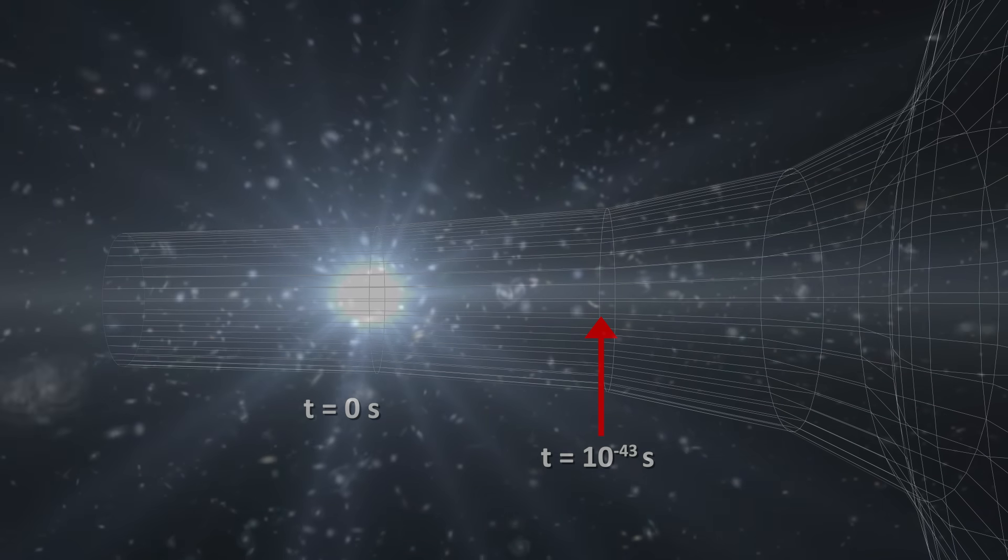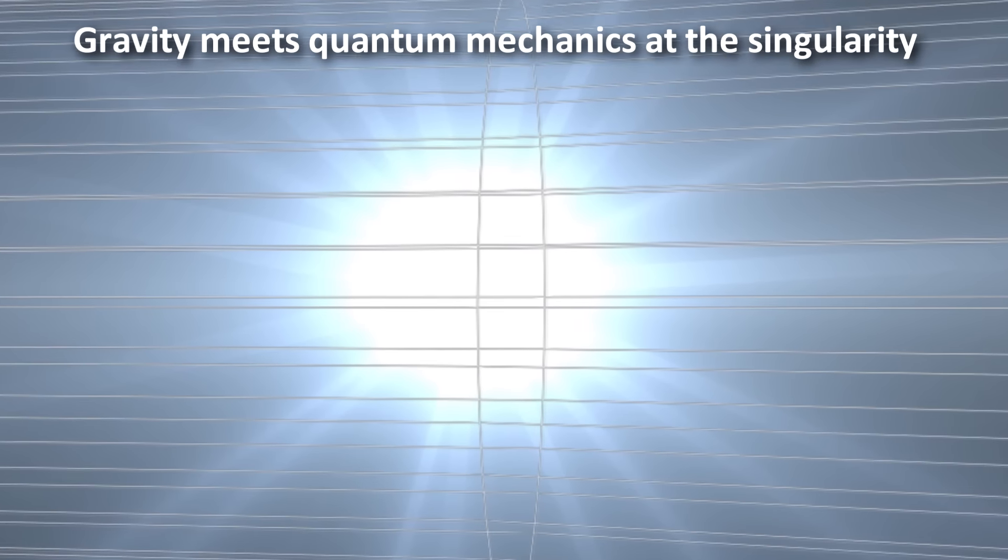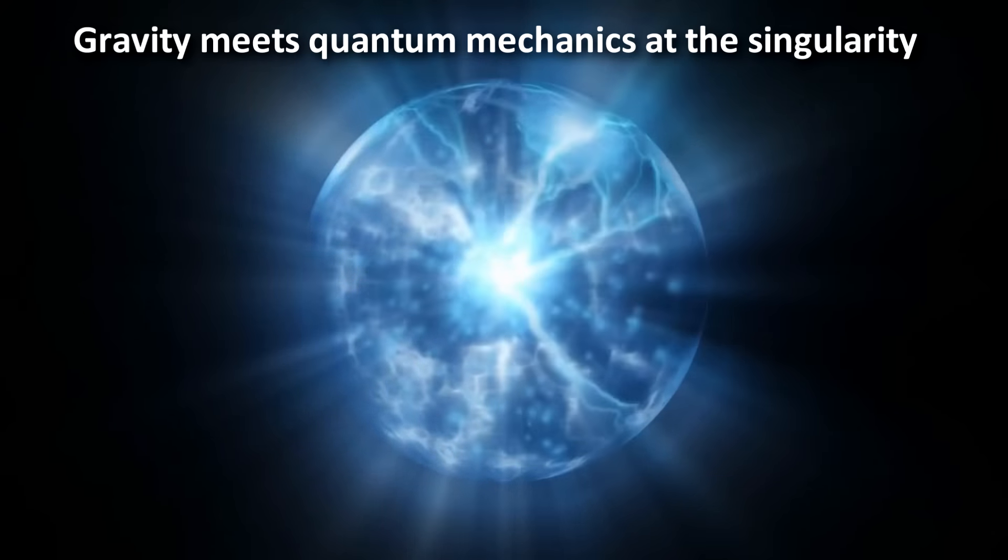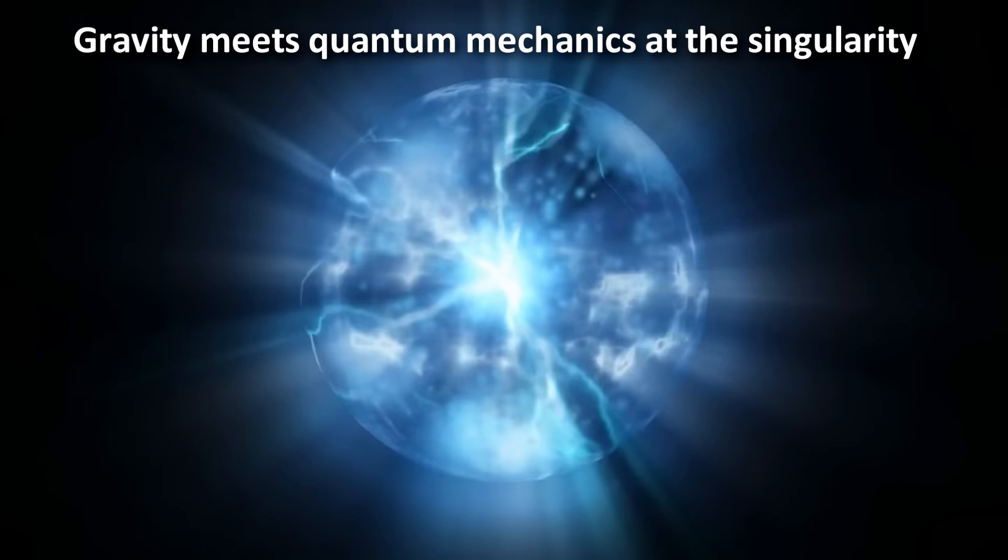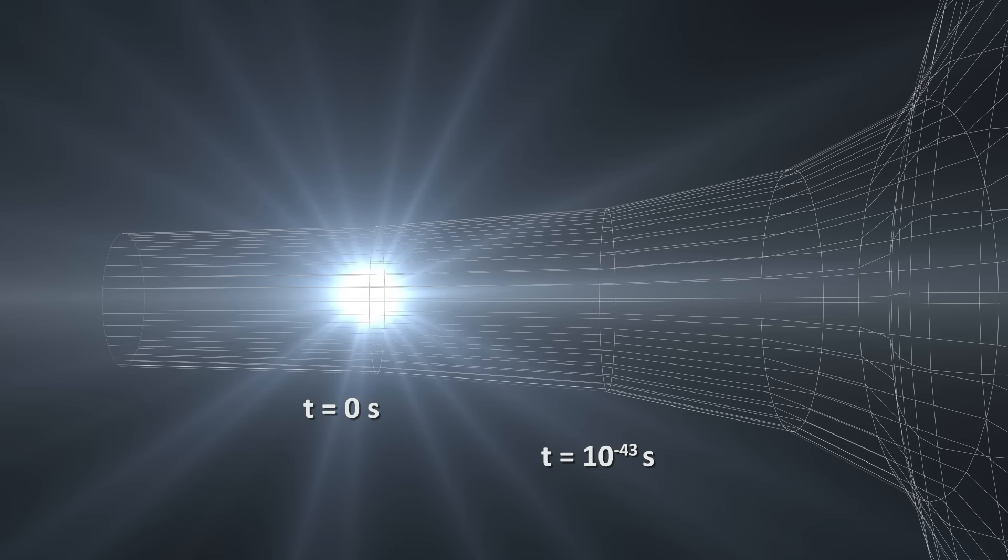Even to understand what happens here, at t to the negative 43 seconds, we would need a quantum theory of gravity. Because it is here where gravity, the theory of the very large, meets quantum mechanics, the theory of the very small, because all matter and energy and thus gravity would be confined presumably to the tiny scales of quantum mechanics. This 10 to the negative 43 seconds is considered the first epoch of the universe and is often called the Planck epoch, or era.